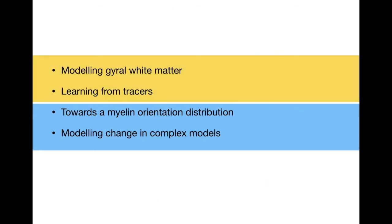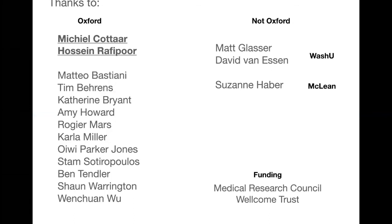I don't have a one-thread summary slide because I gave four talks rather than one. I just want to finish by reminding you the topics I've covered today: modeling gyral white matter, learning from tracers, the myelin orientation distribution, and the model of change. I hope some of it interested you and I look forward to your questions. I'll finish with a huge thanks again to Michele Cotard and Hossein Rafipoor whose work I presented today, but also massive thanks to all my collaborators in Oxford and beyond, and to the funders. Thank you for listening. I look forward to the questions.